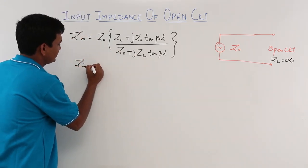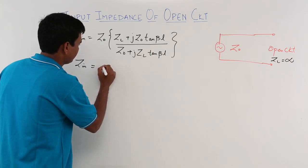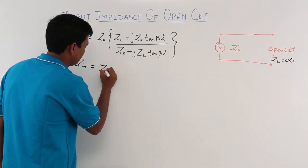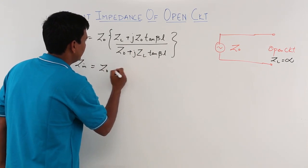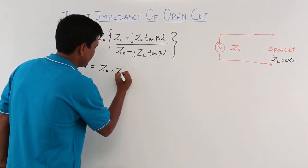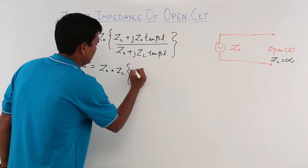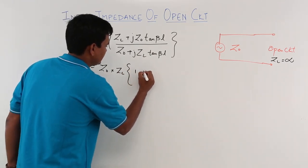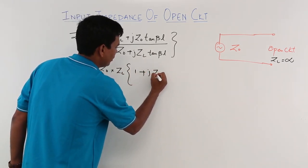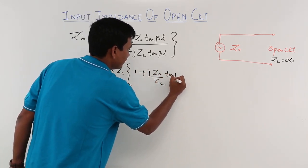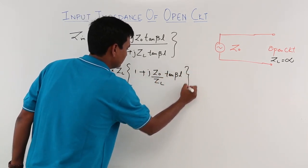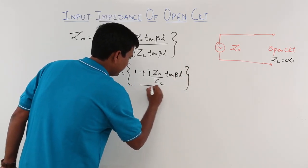What we can do is we can slightly tweak this equation. Let me take Z L common. It will become, taking Z L common, 1 plus J Z naught by Z L tan beta L divided by